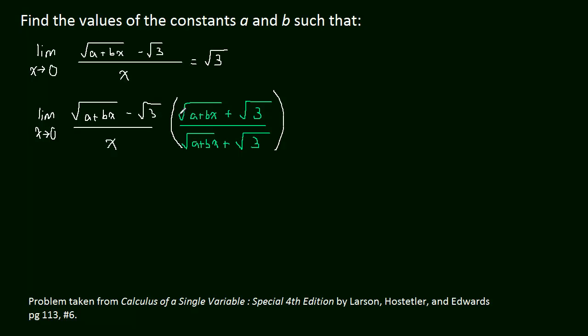Okay, and we know what's going to come out. This will be the limit as X approaches 0. And both these terms will be squared, so they'll be rationalized. So this will be A plus BX minus 3 all over X times radical A plus BX plus radical 3.